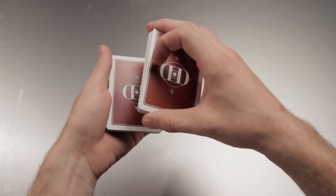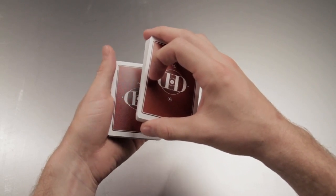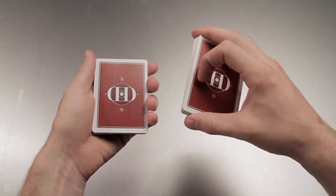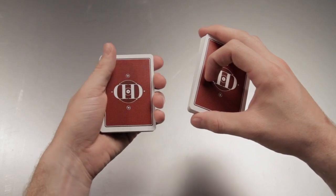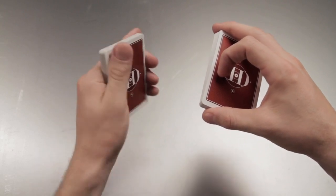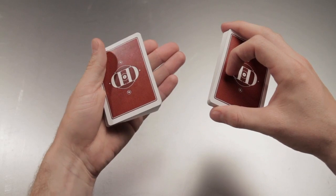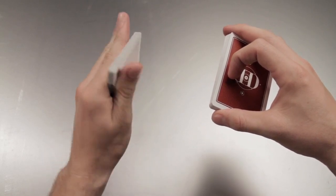From this point however, two things happen simultaneously. With the left hand, the thumb transfers from the edge of the deck to the upper left corner. You're now going to clip that corner between the thumb and base of the fingers, just like so.